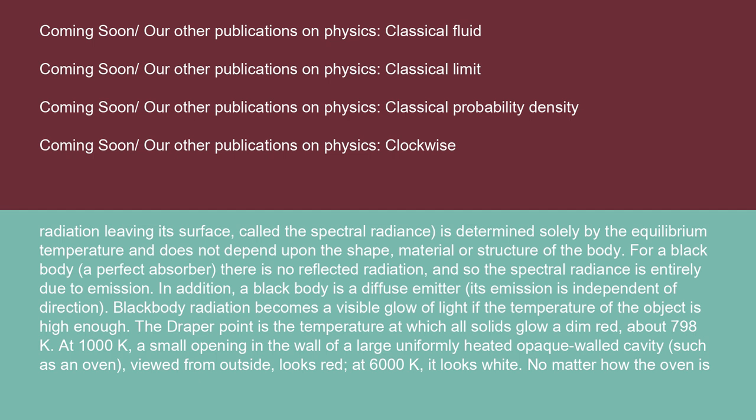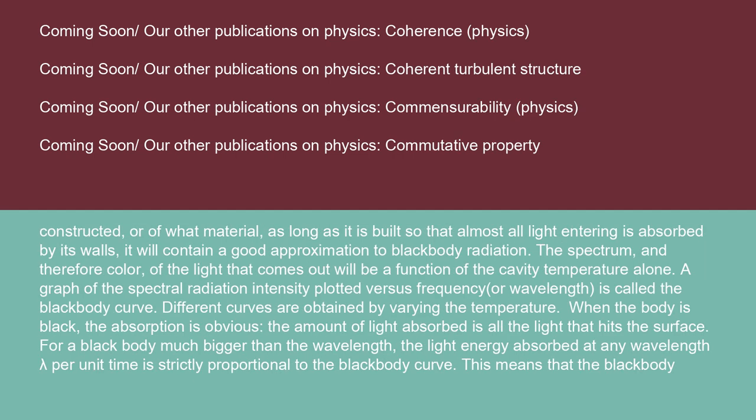At 1,000 K, a small opening in the wall of a large uniformly heated opaque-walled cavity, such as an oven, viewed from outside, looks red. At 6,000 K, it looks white. No matter how the oven is constructed or of what material, as long as almost all light entering is absorbed by its walls, it will contain a good approximation to black body radiation. The spectrum, and therefore color, of the light that comes out will be a function of the cavity temperature alone.